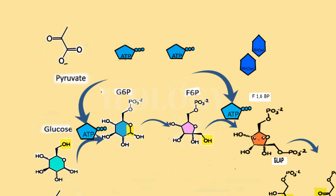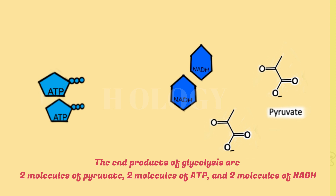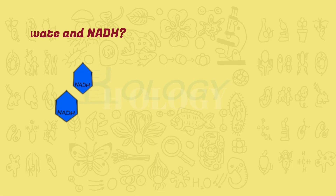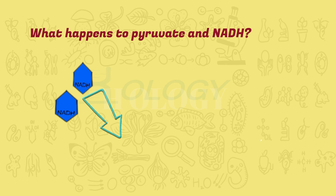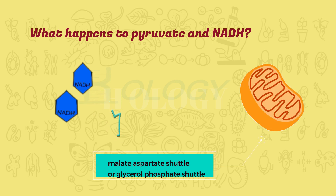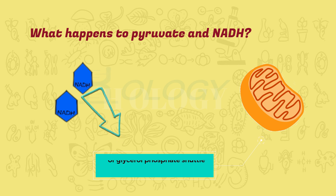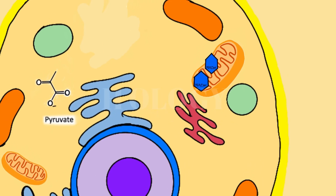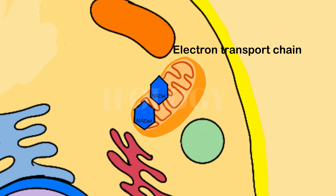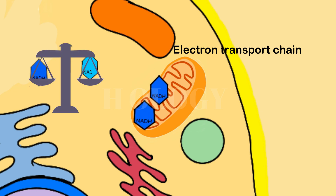What happens to pyruvate and NADH at the end of glycolysis? We're left with two ATP, two NADH, and two pyruvate molecules. NADH can't just sit around in the cell piling up. During aerobic glycolysis, this NADH is transported by the malate-aspartate shuttle or glycerol phosphate shuttle to the mitochondria, where it is reoxidized to NAD⁺ while it participates in the electron transport chain to produce ATP. This maintains the redox states of NADH and NAD⁺ in the cytosol and mitochondria.